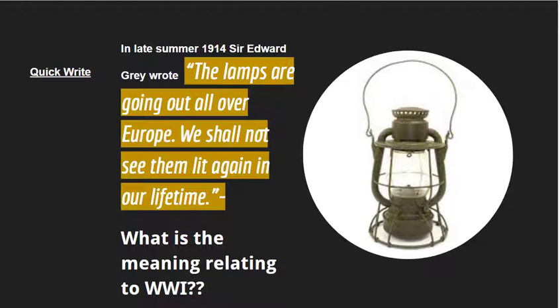By 1914, Europe was divided into two rival camps. One alliance was the Triple Entente, which included Great Britain, France, and Russia. The other was known as the Triple Alliance, and this included Germany, Austria-Hungary, and Italy.